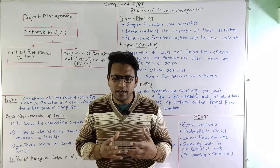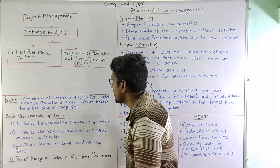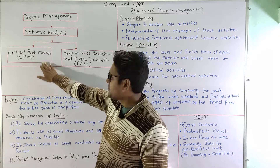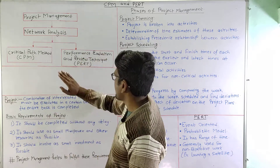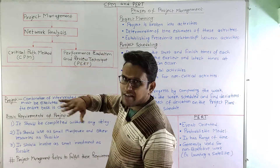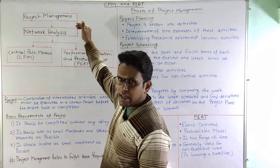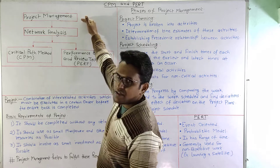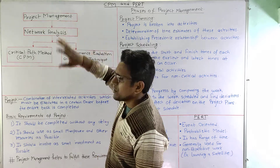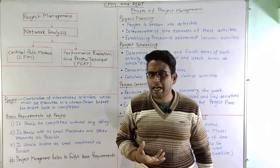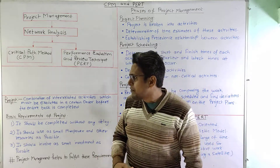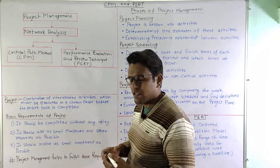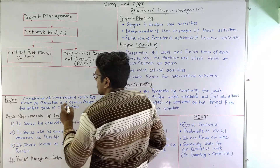As we have discussed, Critical Path Method (CPM) and Performance Evaluation and Review Technique (PERT) are network techniques that come under network analysis. Network analysis is one of the ways to do project management. First of all, we need to understand what project management is, and before that we must understand certain terms that we will encounter in this chapter.